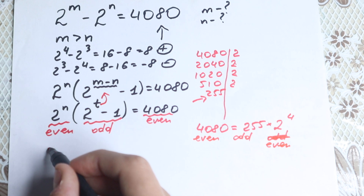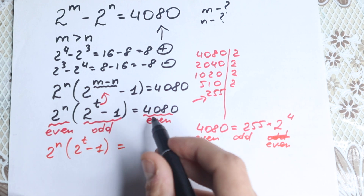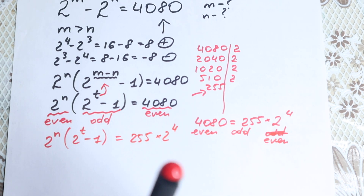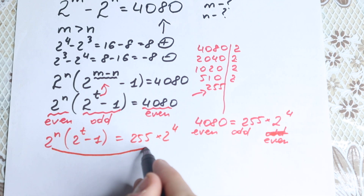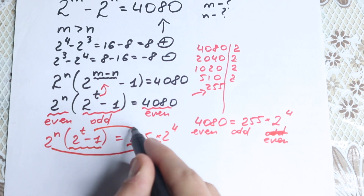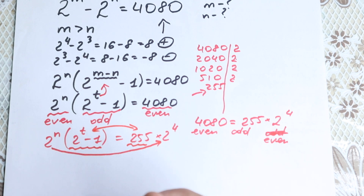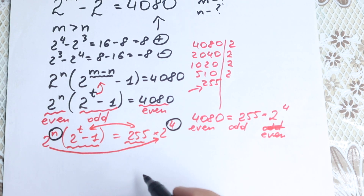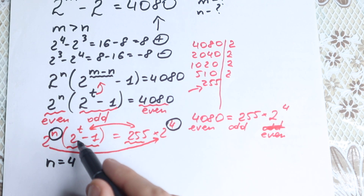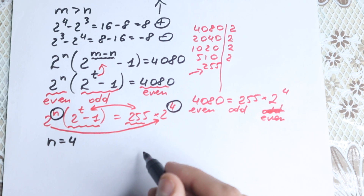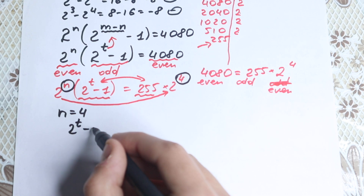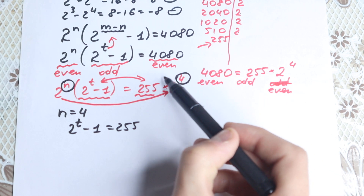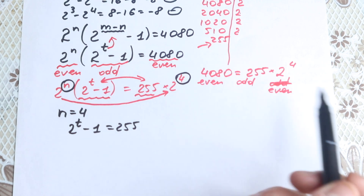Now if we write our expression once more: 2 to the power n times 2 to the power t minus 1, and we write 4080 as 255 times 2 to the fourth power, we can connect the matching parts. We connect 2 to the n with 2 to the fourth power — both even — and we connect 2 to the power t minus 1 with 255 — both odd. This is valid because this is a product and the odd and even parts must correspond.